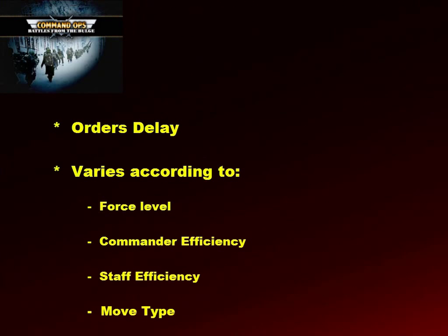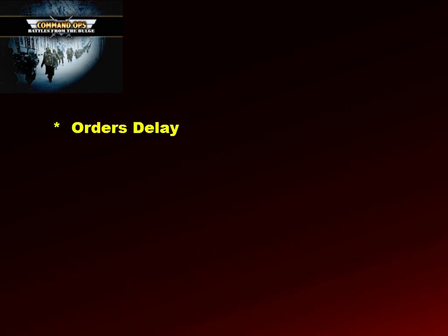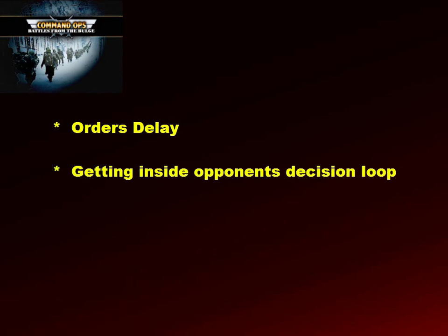The difference in efficiency doesn't have to be all that great to make a significant difference over time. If you have two battalions where one can process its orders in 60 minutes and another in 50, and they make five decisions per day, then the one that does it in 50 minutes is going to end the day one complete cycle ahead of their opponent. This is referred to as getting inside your opponent's decision loop.